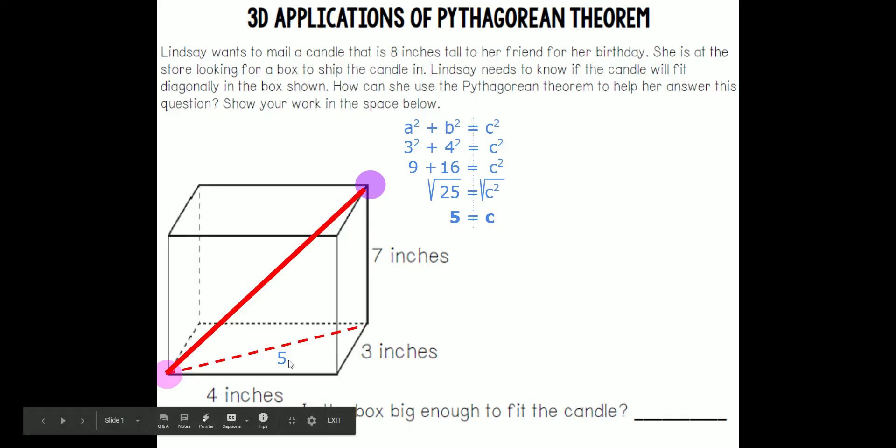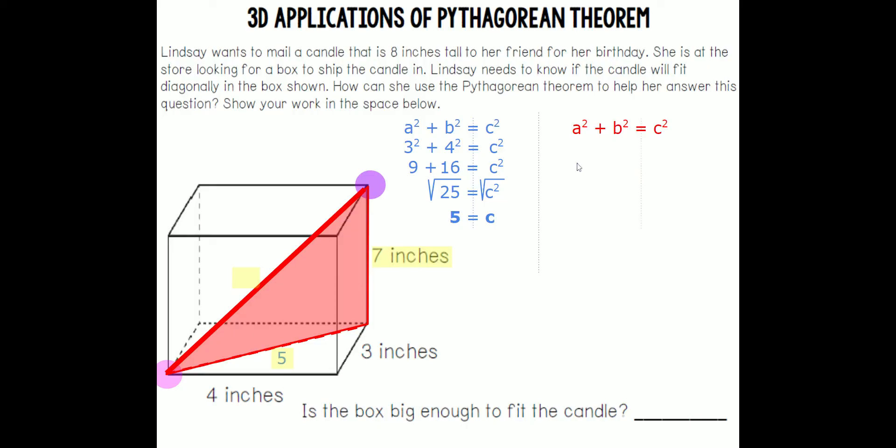Now we have some more information to figure out our original right triangle. Our hypotenuse is missing for this right triangle. We've got both legs. One is seven inches, and the other is five inches. A squared, which is going to be five squared, plus B squared, which is going to be seven squared, equals the missing side, which is C squared.